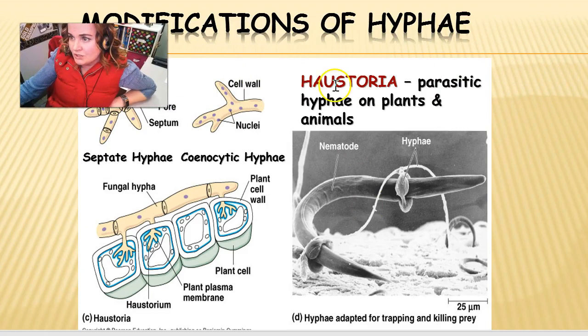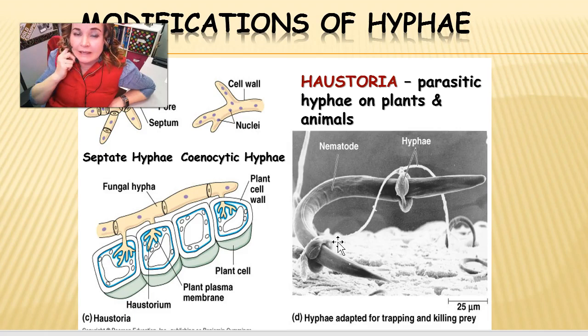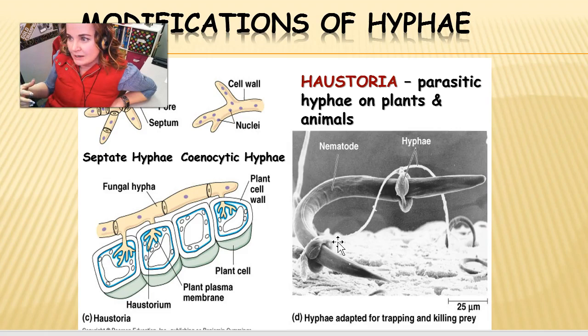Another modification involves hyphae that act almost like lassos — they lasso onto other microorganisms and then digest them alive. These are considered predatory fungi. There are very few of them, but they do exist, and it's a fascinating modification. This one shown is eating a nematode.